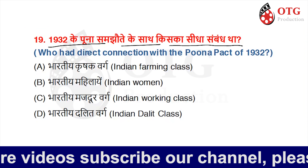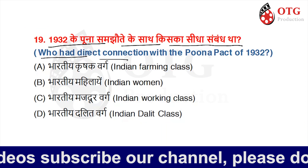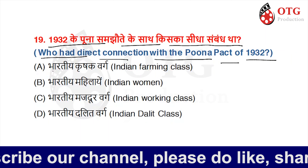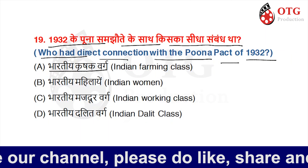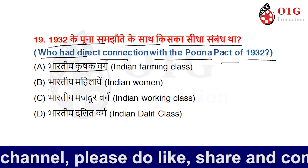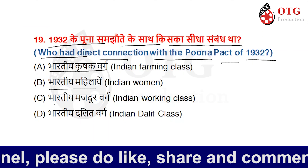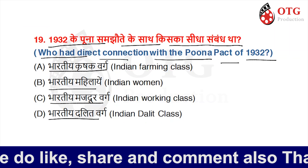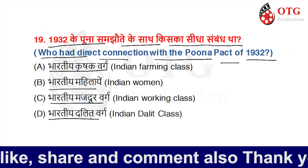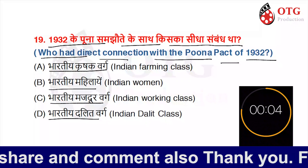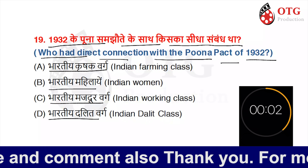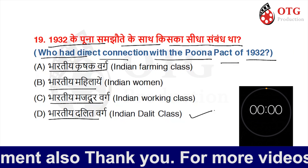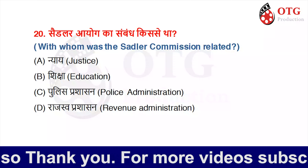Who had direct connection with the Poona Pact of 1932? Option A is Indian farmers, Option B is Indian women, Option C is Indian labour class, and Option D is Indian Dalit class. Your time starts now. The right option is Option D, Indian Dalit class.